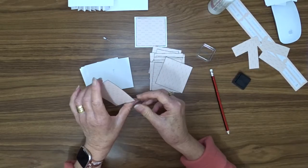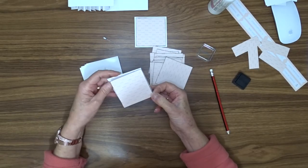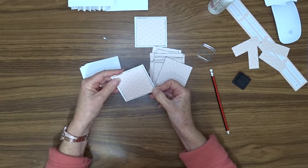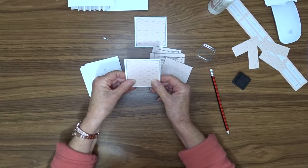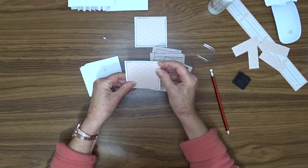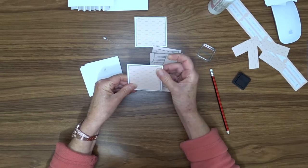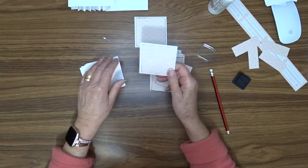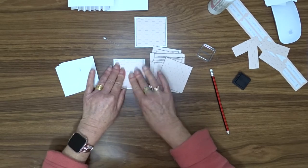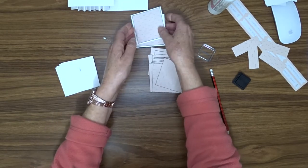So I've marked each one of those white cardstocks so I know which is the top and then I know that I can put my pattern paper on so that the pattern is going in the same way on all of them. If you chose a non-directional pattern paper you wouldn't have to worry about doing this step.